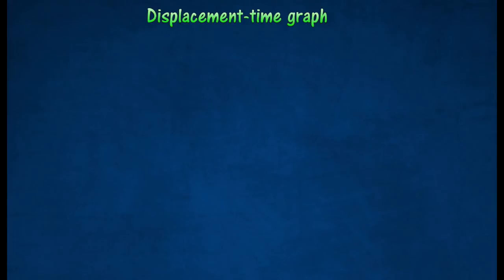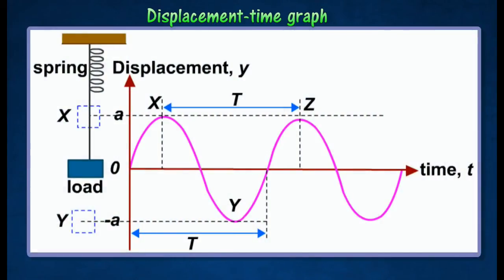Displacement Time Graph can be deduced from the oscillation of a loaded spring about its mean position O. One complete oscillation occurs when the load oscillates from O to X and then from X to Y and finally back to O.